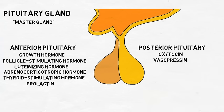Oxytocin has important roles in facilitating childbirth and lactation, but is also thought to have a role in compassion and social bonding. Vasopressin's main functions are to control urine output and regulate blood pressure.